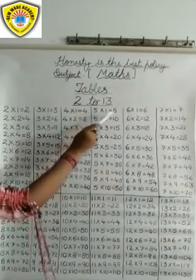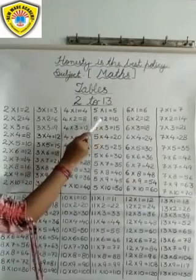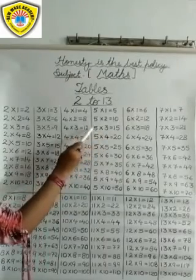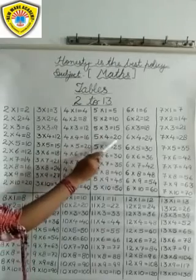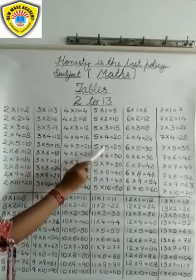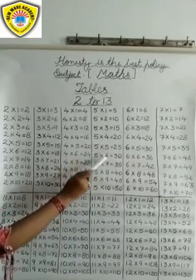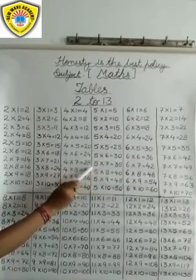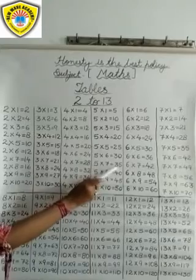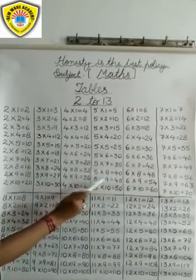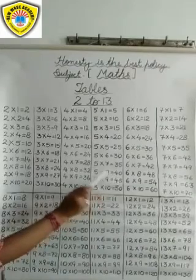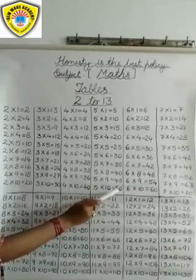5 1s are 5. 5 2s are 10. 5 3s are 15. 5 4s are 20. 5 5s are 25. 5 6s are 30. 5 7s are 35. 5 8s are 40. 5 9s are 45. 5 10s are 50.